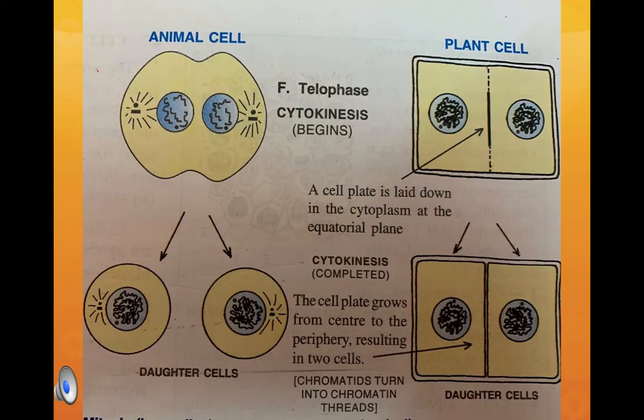In telophase, two sets of daughter chromosomes have reached the opposite poles. The spindle fibers have disappeared, and the chromatids have thinned out again into chromatin fibers. The nuclear membrane has reformed, the cleavage furrow has started deepening in the animal cell, and the nucleolus has reappeared. Finally, cytokinesis — division of the cytoplasm — takes place: the cleavage furrow deepens completely, separating the two daughter cells.